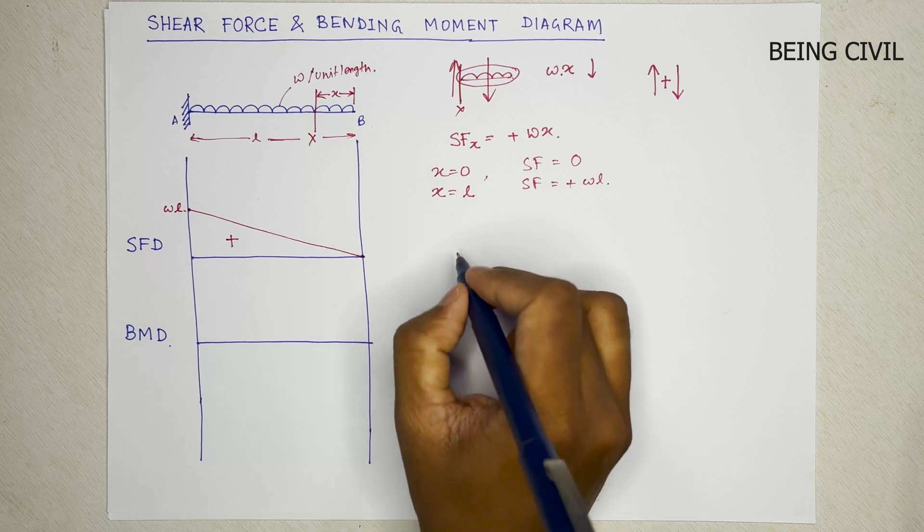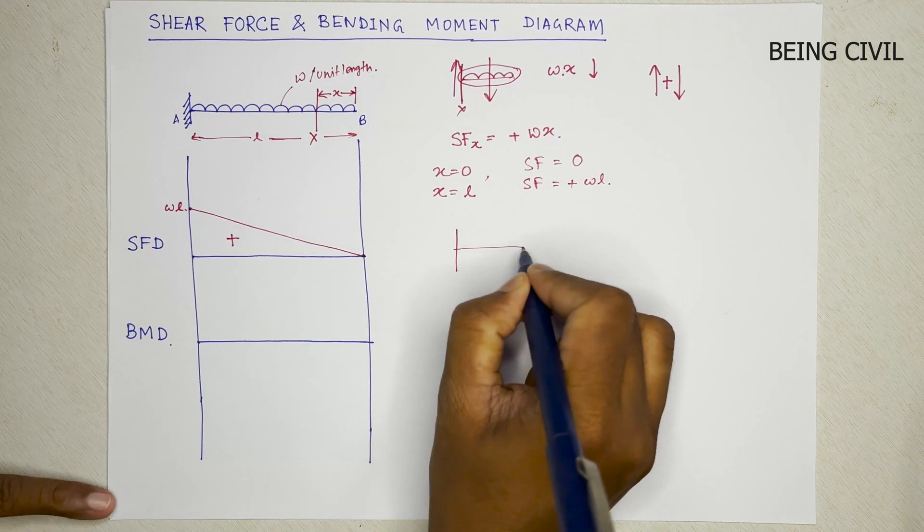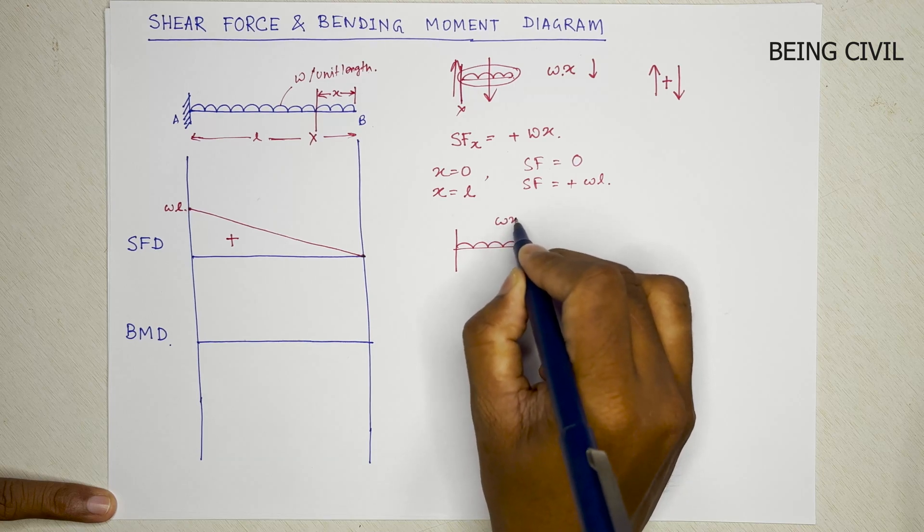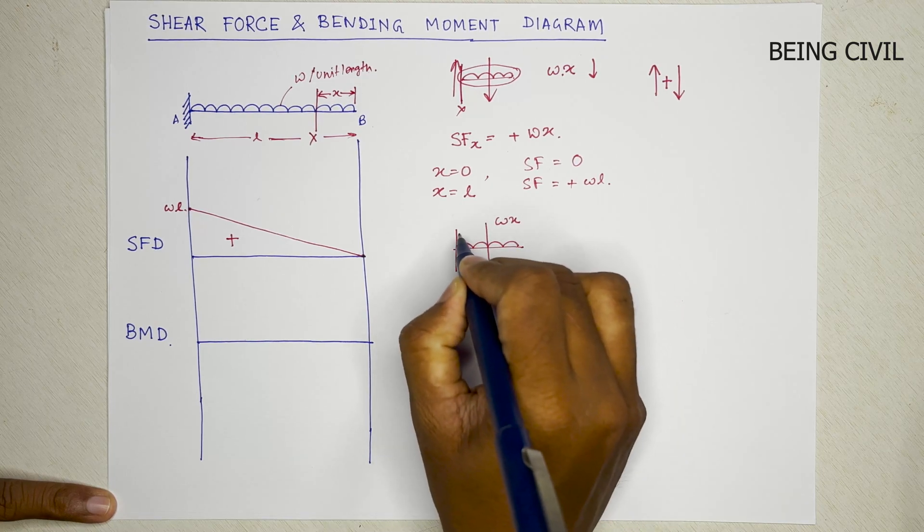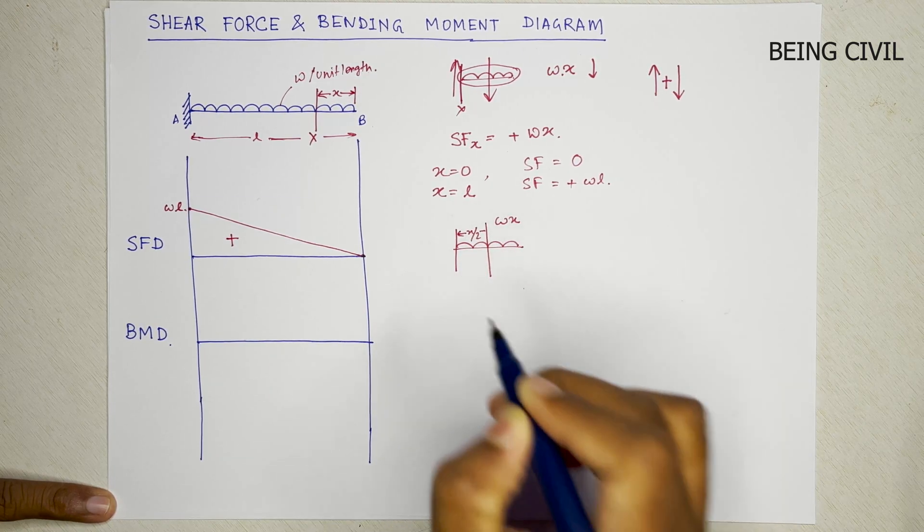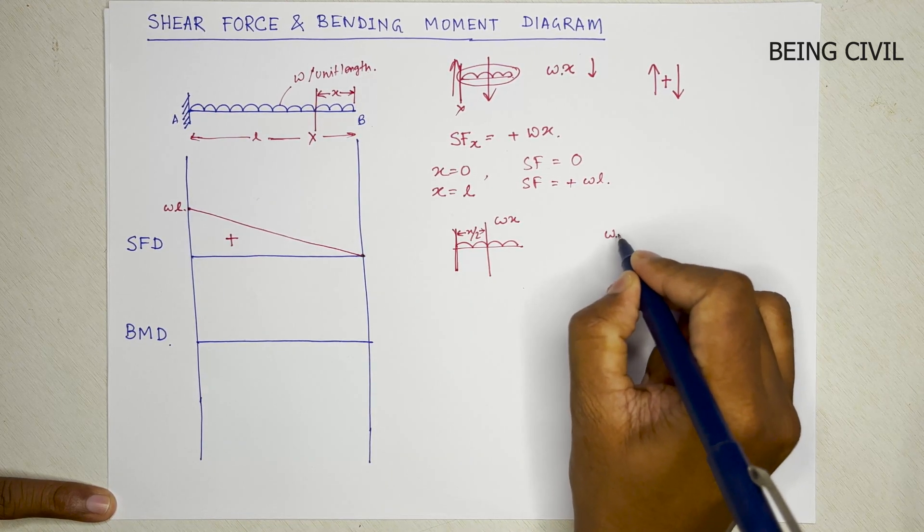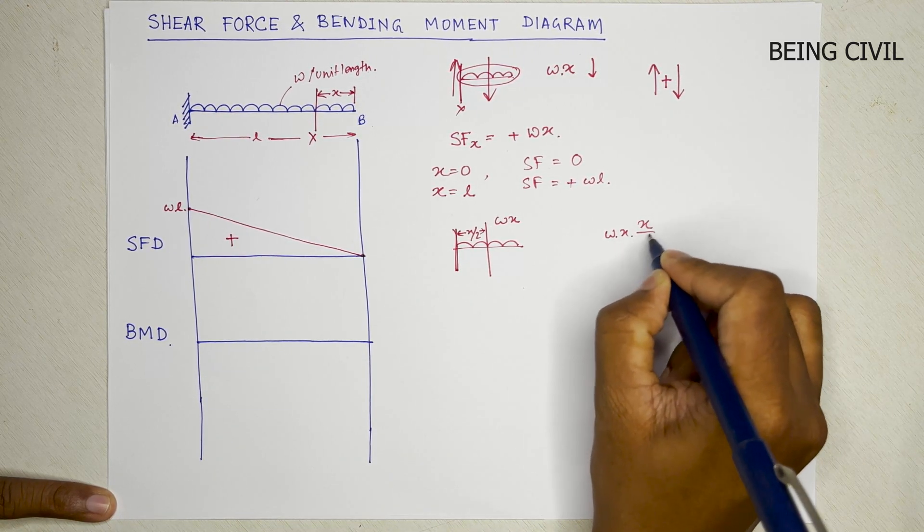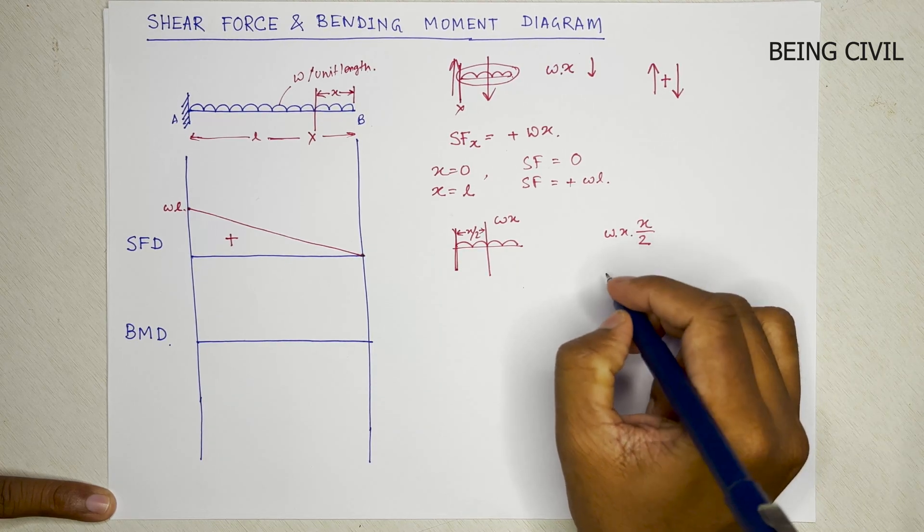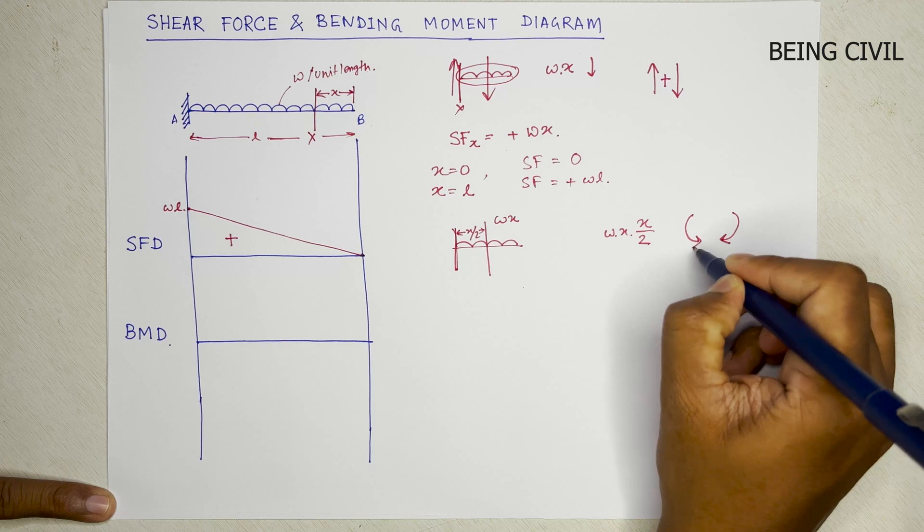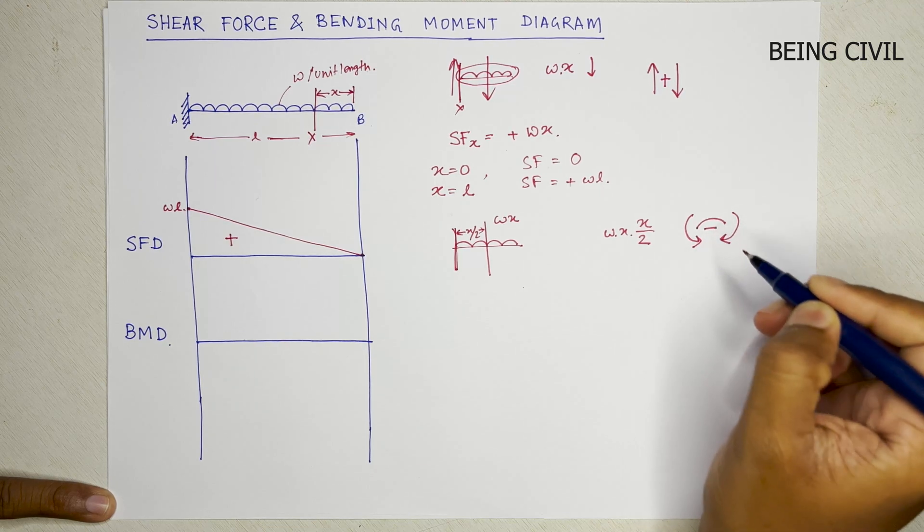So for this section, the total load is wx and the CG distance is x by 2. So at this section, the moment is w into x into x by 2, and the nature of the force is like this, so it's hogging in nature.